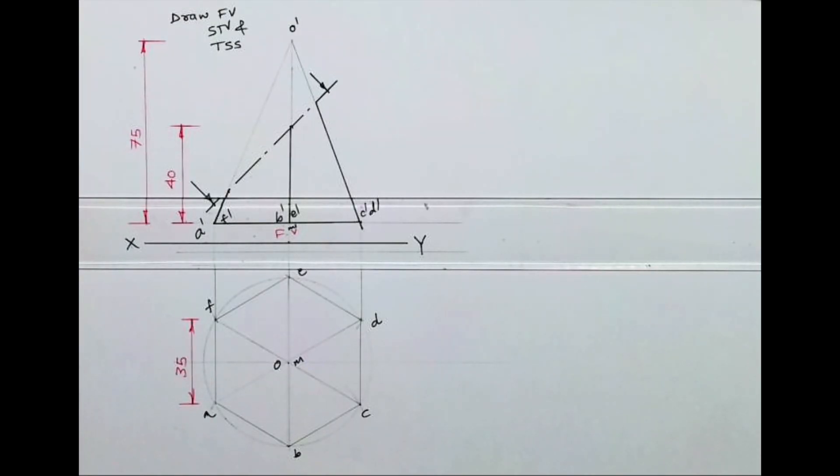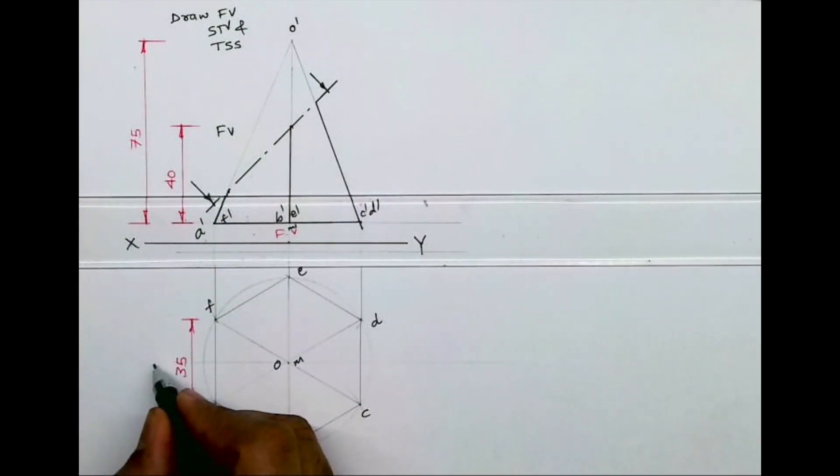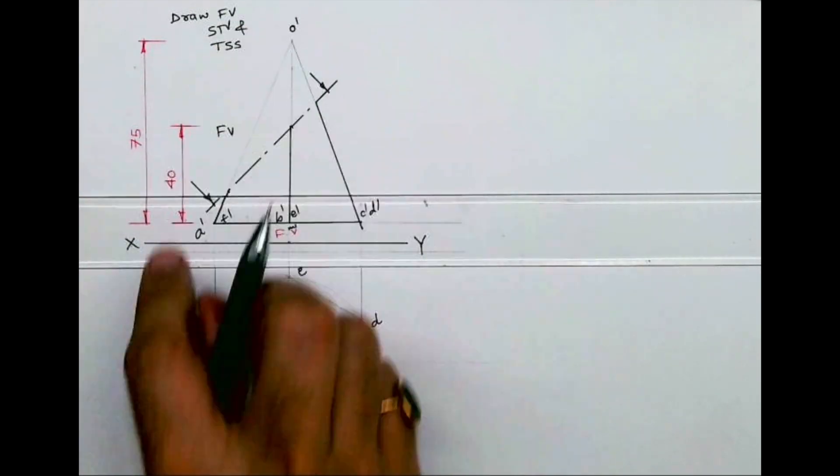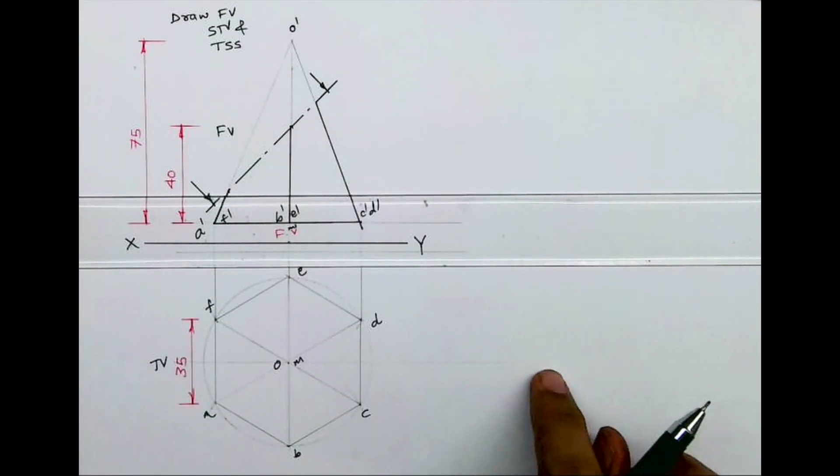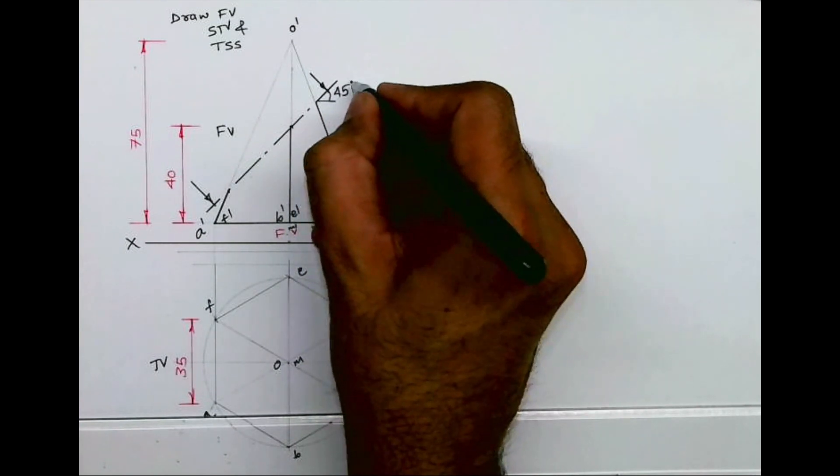Welcome to technical drawing. Today we'll see this problem. Front view and top view are given. We need to draw sectional top view and TSS. First, we will draw the cutting plane line which is inclined at 45 degrees from the base.